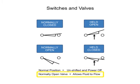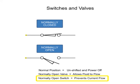While a normally open valve allows fluid to flow, a normally open switch prevents current from flowing. Electrical current can flow across the switch as long as both sides are touching contactors.